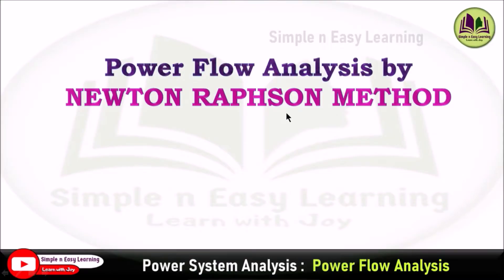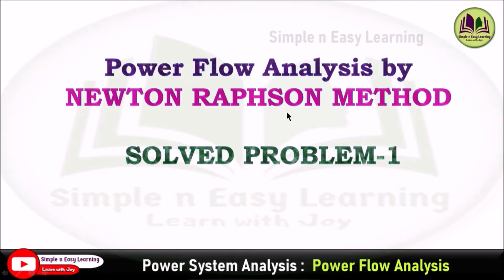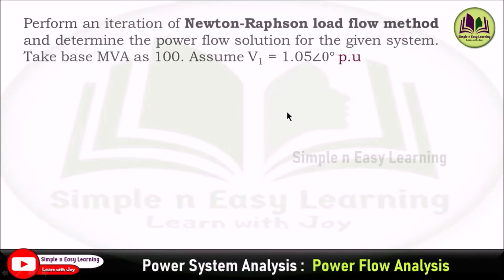Power flow analysis by Newton-Raphson method. Solved problem one: Perform an iteration of Newton-Raphson load flow method and determine the power flow solution for the given system. Take the base MVA as 100 and assume the voltage V1 equal to 1.05 angle 0 per unit.